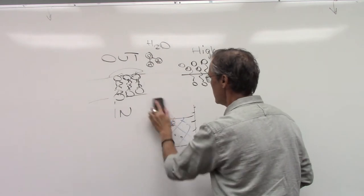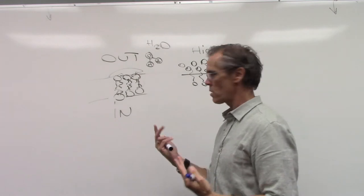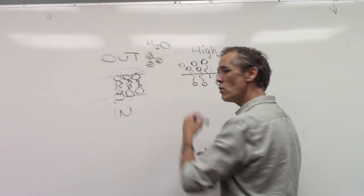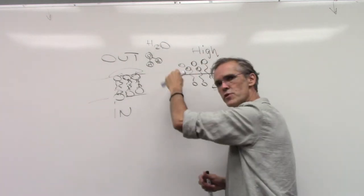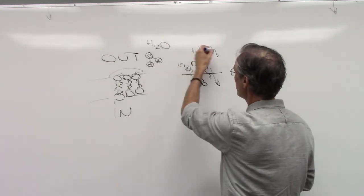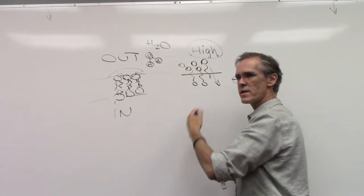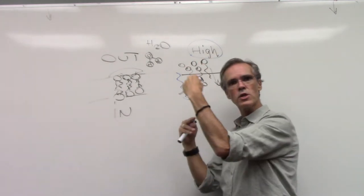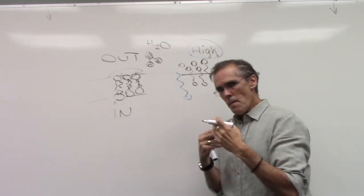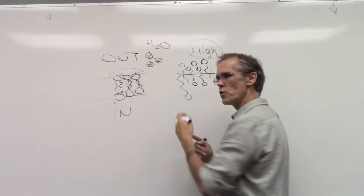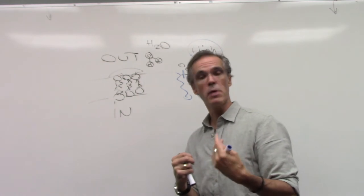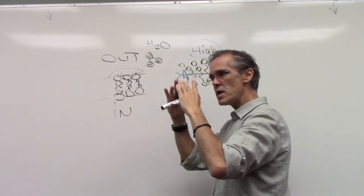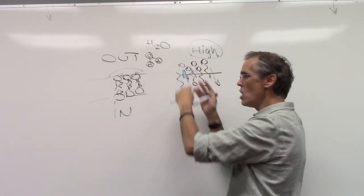Coming back to our membrane: when you have molecules that can cross a membrane one way or the other — either in or out — if those molecules can interact with the hydrophobic core of the membrane, they will move, but they always move down a gradient, from high concentration to low concentration. We have a high concentration of whatever molecule on the outside of the cell. If it can make its way in, it will, and it will follow that gradient until there is equilibrium — until the concentration on the outside equals the concentration on the inside. That's simple diffusion.